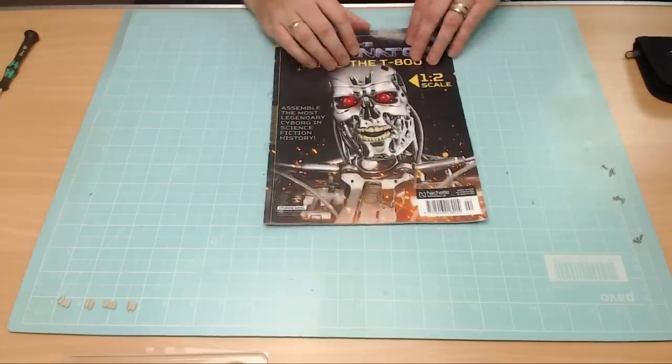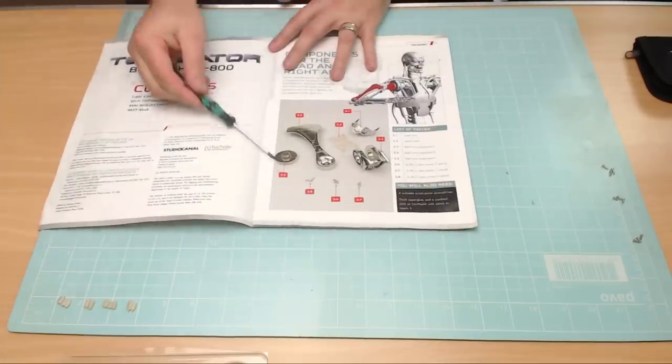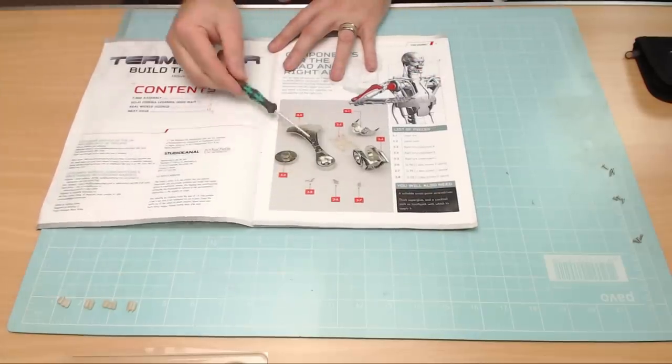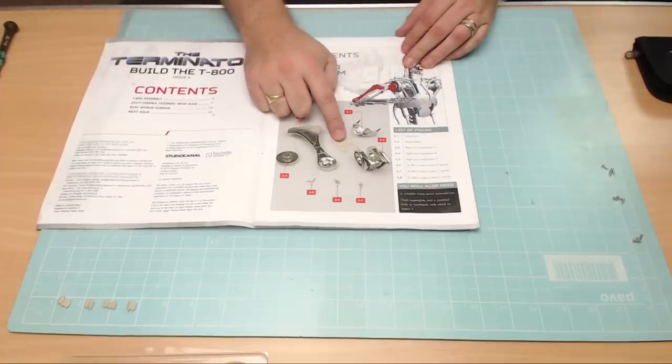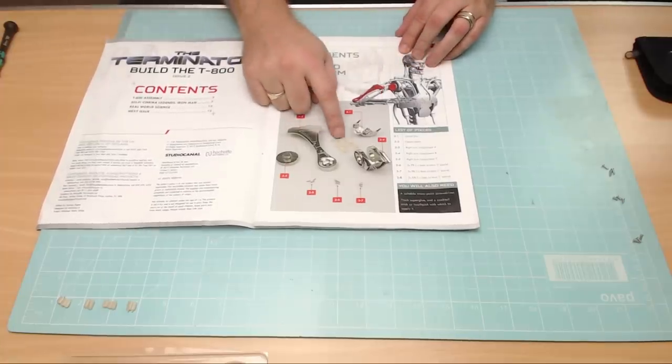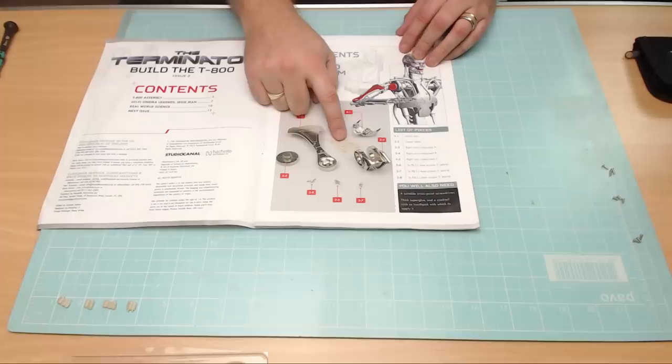Remember this is 120 issues. So in the magazine, always take inventory of what we got here and make sure that you've got those in your delivery. We have got the teeth in this one, we're going to be doing the right arm and the teeth. The teeth I've already cut off the sprue just so you know.